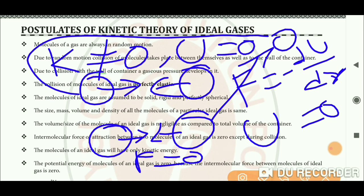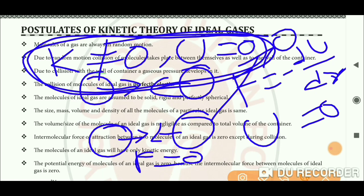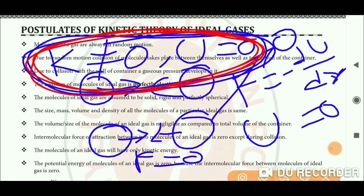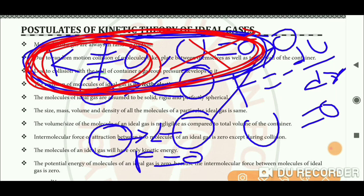So for an ideal gas, only kinetic energy remains — potential energy is zero. When both energies are combined, it is called the internal energy of the gas. For ideal gas, there is no potential energy in the internal energy — only kinetic energy remains. This kinetic energy is also called the internal energy of the ideal gas.